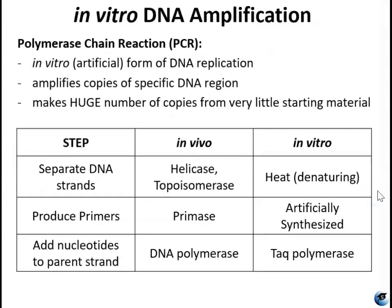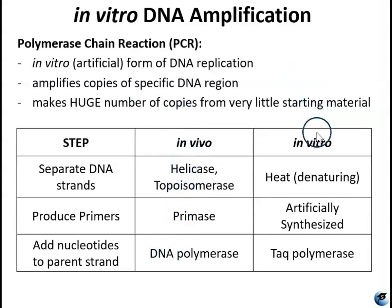Most methods of DNA analysis require large amounts of DNA. The polymerase chain reaction permits rapid amplification in the number of copies of DNA for further analysis. PCR is an in vitro laboratory technique that takes advantage of the natural process of DNA replication. We discussed in lab 9 how in vivo DNA replication is done, and in lab 10 we're going to talk about how that is done artificially in the lab. Basically you have three major steps: separating the strands, making primers, and adding new nucleotides to the parent strands.